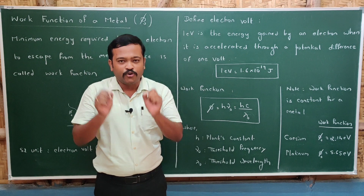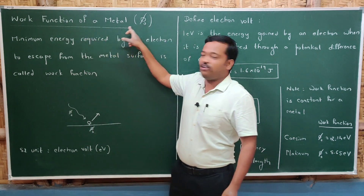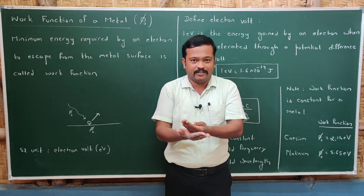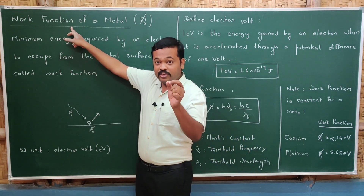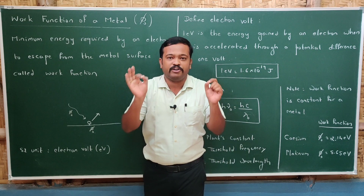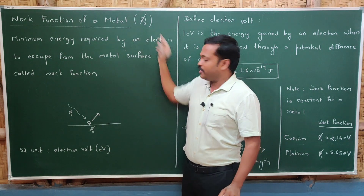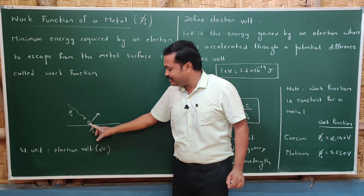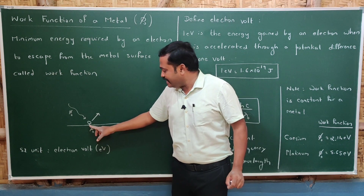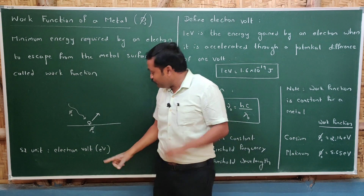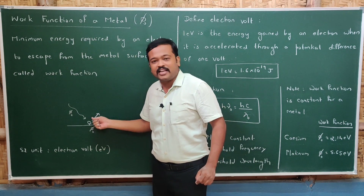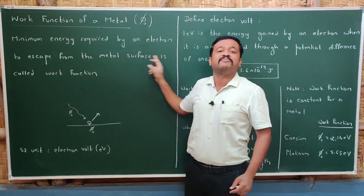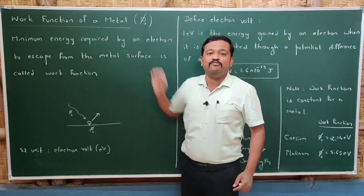Before we study photoelectric emission, we need to understand one concept called the work function of a metal. A metal consists of free electrons, and work function is a property of a metal, denoted by φ₀. The energy with which an electron is bound to the nucleus is called the work function, and that much minimum energy you need to supply to make this electron come outside. So, work function is the minimum energy required by an electron to escape from the metal surface.